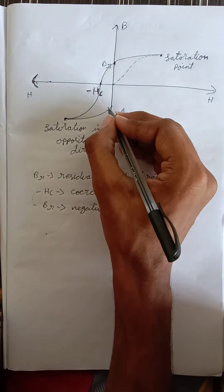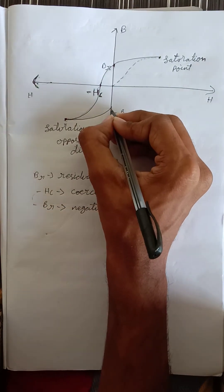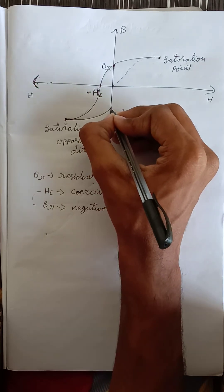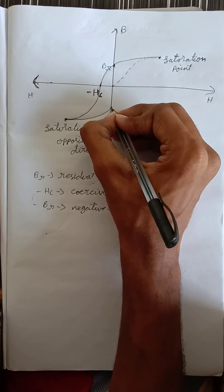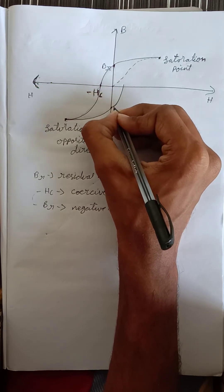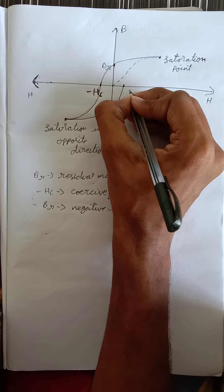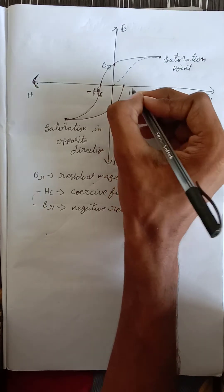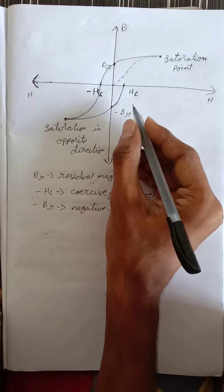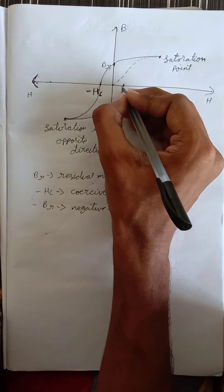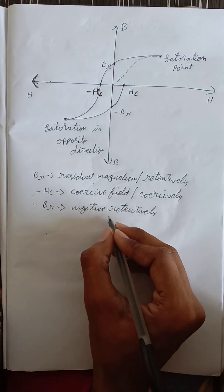To destroy the negative residual magnetism and make it zero, we apply a positive magnetic field on the material. By applying this positive magnetic field, the material reaches a point on the H axis, represented as HC as it is on the positive axis. This point HC is also called the coercive field or coercivity — same definition as before.